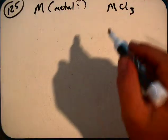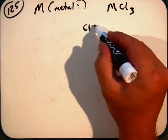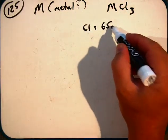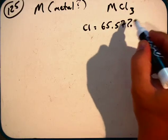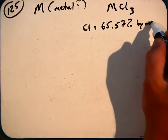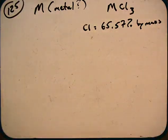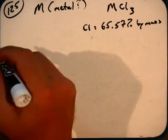If this compound contains chlorine with a mass percent of 65.57% by mass, what is the identity of the metal? So we have to use this 65.57% in order to figure out what M is. So how can we do that?